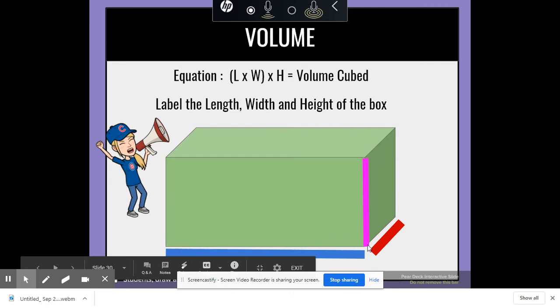The width would be this red line right here from this side to this side, so we'd write a big W there. And then from the bottom of the pink line to the top of the pink line, that would be our height.